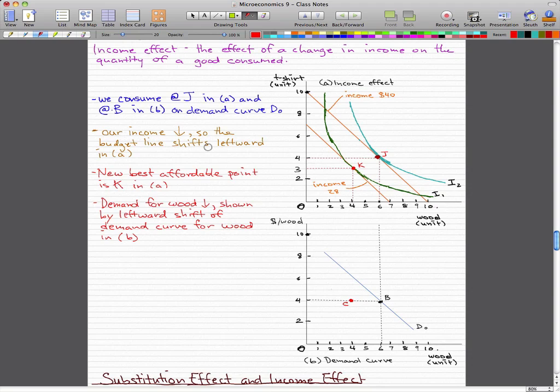Now, let's say that our income decreases. So what actually happens is our budget line shifts leftward from this income equals $40, from this income to income equals $28. So our budget line shifted leftward.